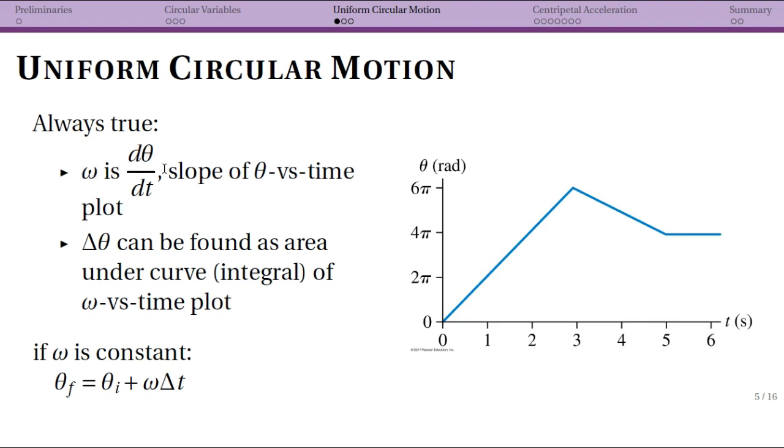This is always true, but in uniform circular motion, we'll see a straight line so the slope is constant. If you have more complicated circular motion, you can always use the slope of your θ versus t plot to find ω, but in uniform circular motion, we see nice straight lines.